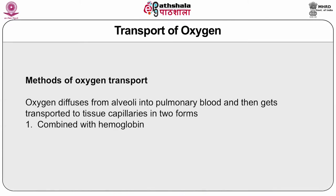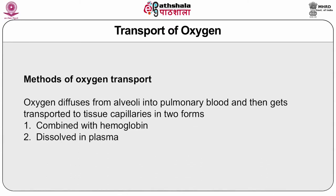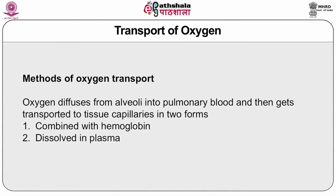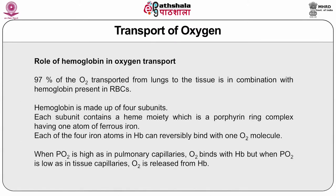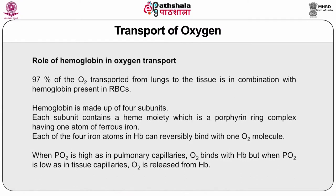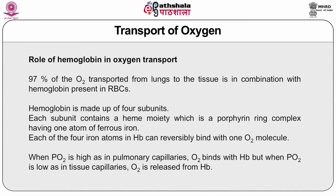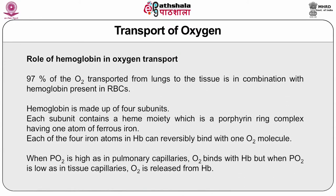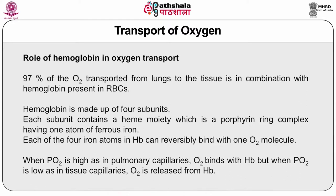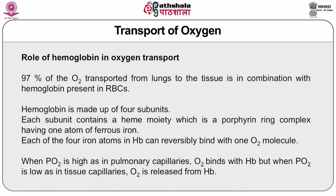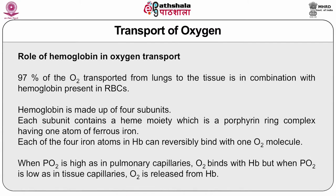Oxygen diffuses from alveoli into pulmonary blood and is then transported to tissue capillaries. It is transported in two forms: combined with hemoglobin and dissolved in plasma. About 97% of oxygen transported from lungs to tissues is in combination with hemoglobin present in red blood cells. Hemoglobin is made up of four subunits; each subunit contains a heme moiety, which is a porphyrin ring complex with one atom of ferrous iron. Each of the four iron atoms in hemoglobin can reversibly bind with one oxygen molecule.